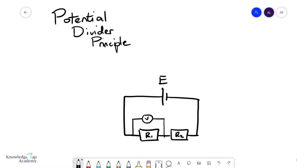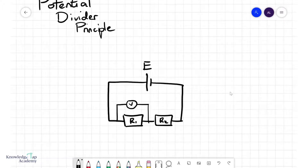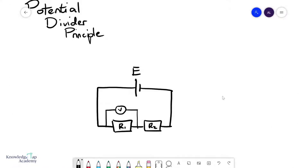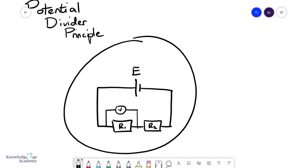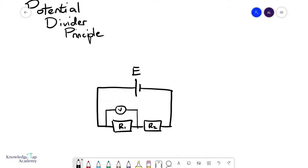In this video we're going to talk about the potential divider principle, which is a very easy principle to understand. First, understand that the potential divider principle is only applicable for resistors in series, such as the one you see below. If the current is i, then the potential difference across R1, V1, equals i times R1, and the potential difference across R2, V2, equals i times R2.